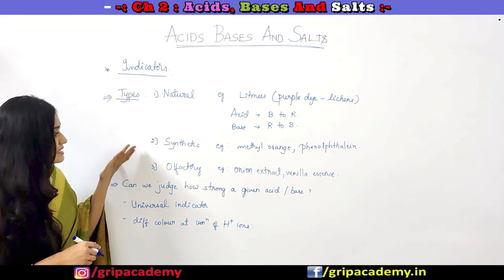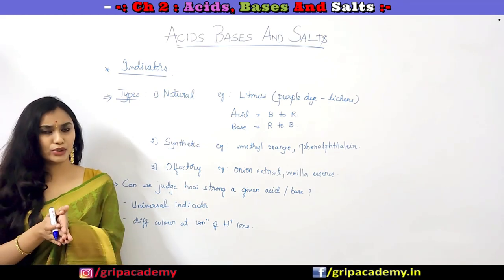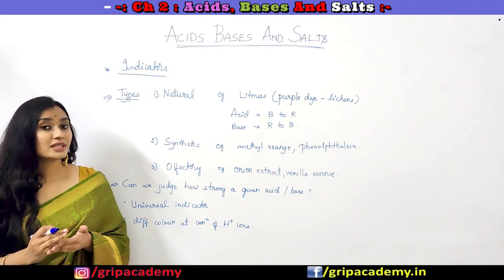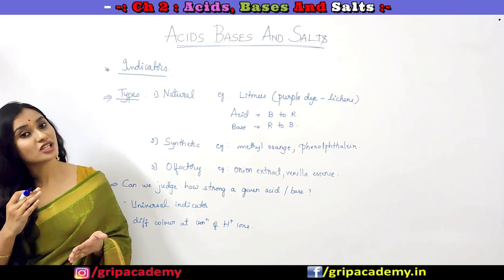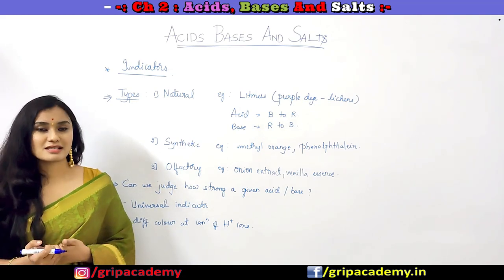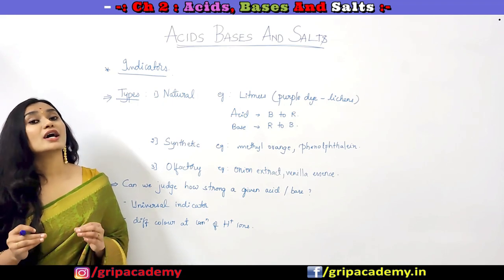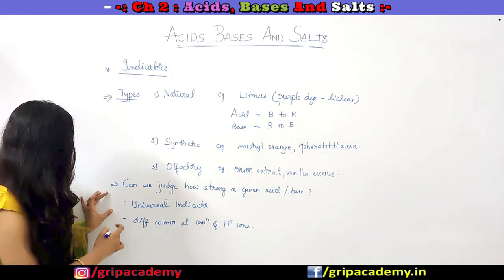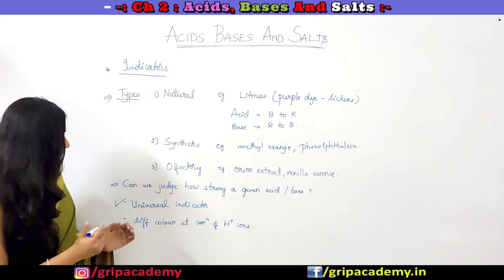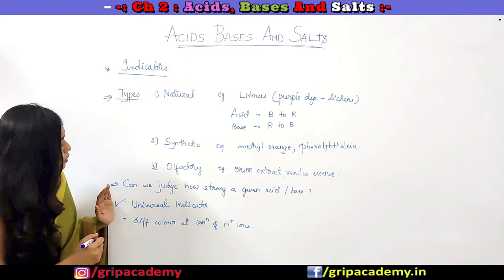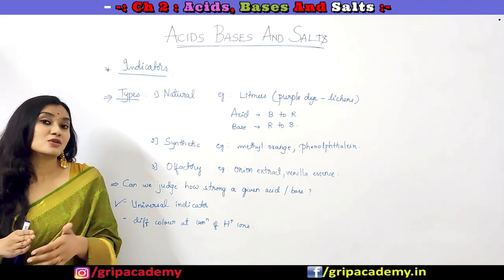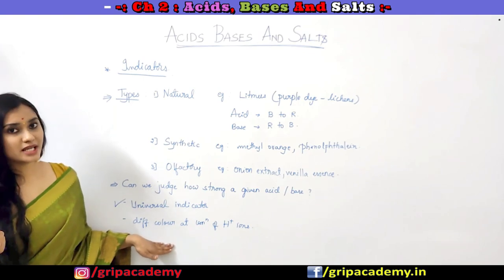With all these indicators, it is clear that we will get to know if a particular substance is an acid or base. But can we really judge how strong an acid or base is? Yes, we can do that with the help of a universal indicator. This universal indicator is nothing but a mixture of seven indicators. Usually, this universal indicator changes color at different concentrations of hydrogen ions. We will learn about this with the help of the pH scale.